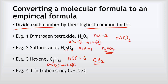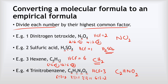Last example: trinitrobenzene, C6H3N3O6. Our numbers are 6, 3, 3, and 6. The highest common factor is 3, because they can all be divided by 3. So: 6 divided by 3 is 2 for carbon, 3 divided by 3 is 1 for hydrogen, 3 divided by 3 is 1 for nitrogen, and 6 divided by 3 is 2 for oxygen. Therefore, our empirical formula is C2HNO2. And that's how we convert a molecular formula to an empirical formula.